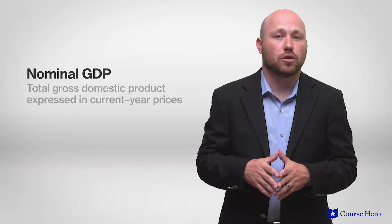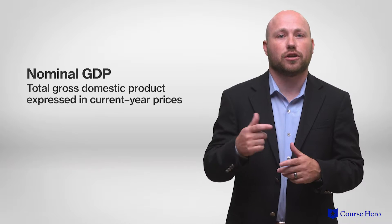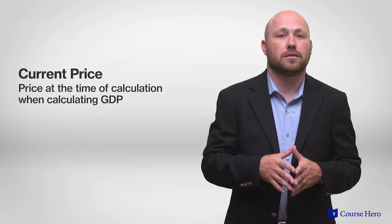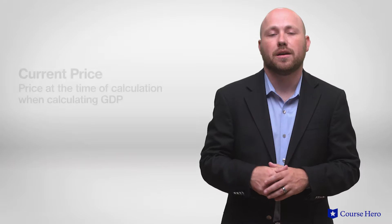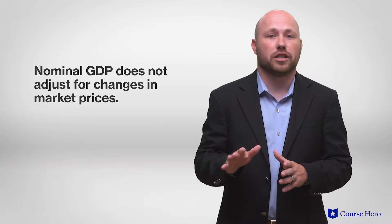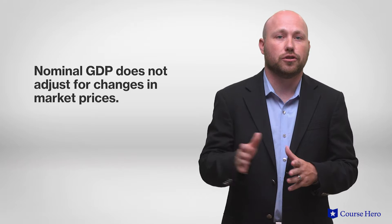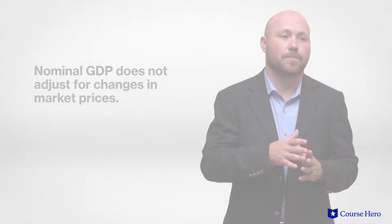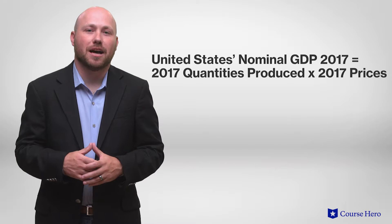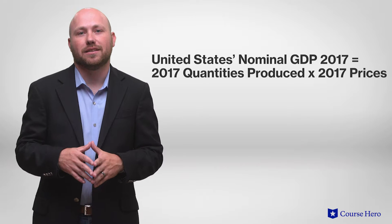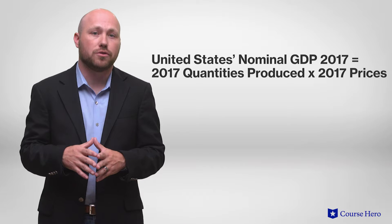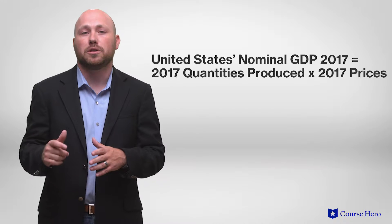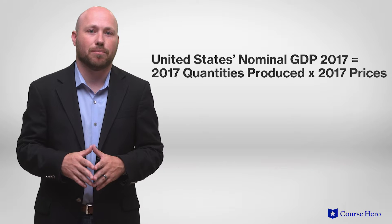Nominal GDP is the total gross domestic product expressed in current year prices. It is calculated according to current prices at the time of calculation and does not adjust for changes in market prices that occurred during the current year. For example, the United States nominal GDP for 2017 is calculated by taking the quantities of all final goods and services produced in 2017 and multiplying them by their 2017 prices.